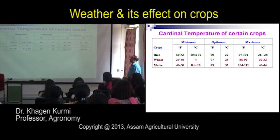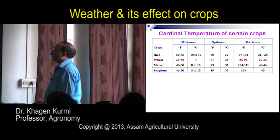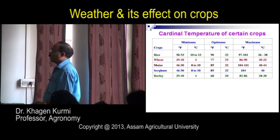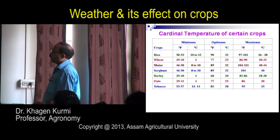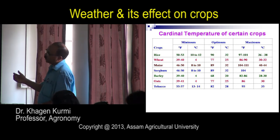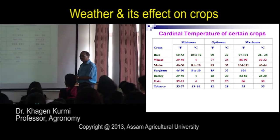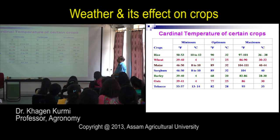C4 plants like maize and millets always show a higher maximum cardinal temperature than C3 cereal crops of the same season. Sorghum also has a maximum of 40°C, similar to maize. Barley and oats are similar to wheat. Tobacco is a summer crop with a maximum around 35°C. At least for major crops — rice, wheat, maize, and sorghum — it is important to remember the cardinal temperature values. Millets can tolerate higher temperatures.